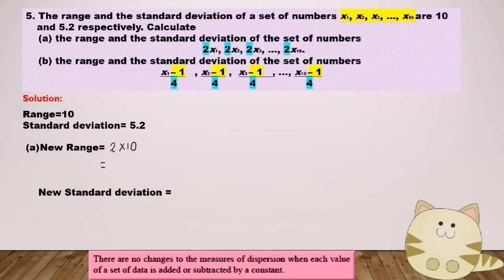New range equals 20. How about new standard deviation? Also constant times the original standard deviation. So 2 times 5.2 equals 10.4.